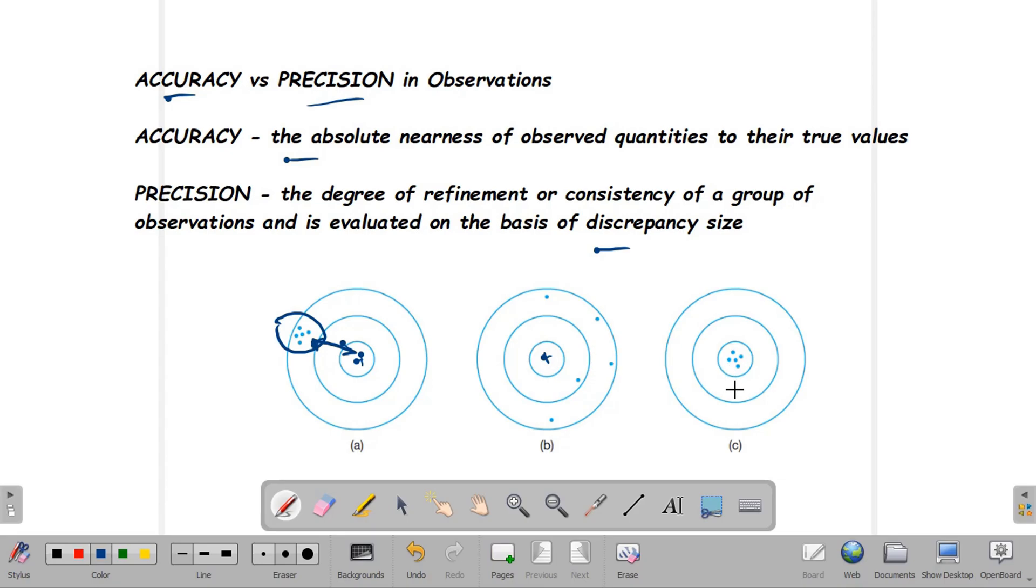For figure C, this is an example of measurements or observations that are both precise and accurate. They're precise because they have smaller discrepancies from each other and they're also hitting the target, so they're almost close to the true value of the measurement. These observations are both precise and accurate.